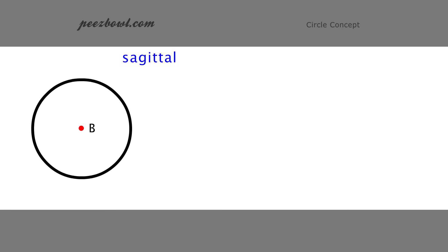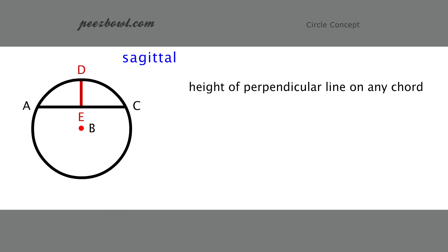Now, look at the line DE. The height of perpendicular line on any chord which divides the chord into equal parts is called sagittal. The sagittal is a perpendicular line from the center of the chord to the arc. In the diagram, height of DE is sagittal. The line DE is dividing the chord AC into equal parts.